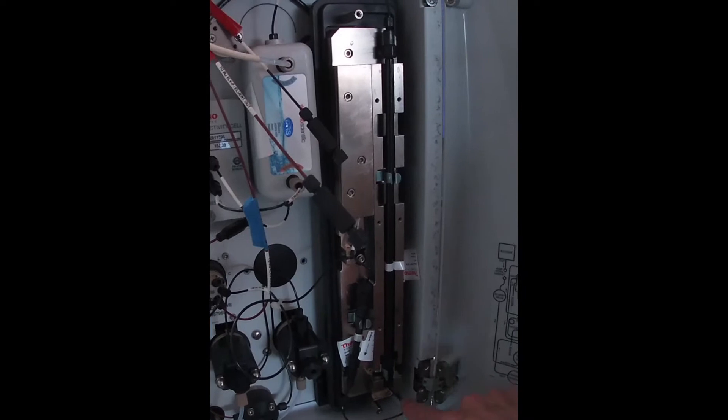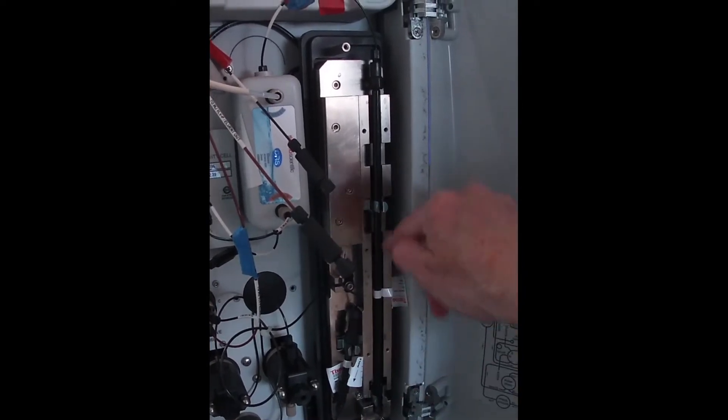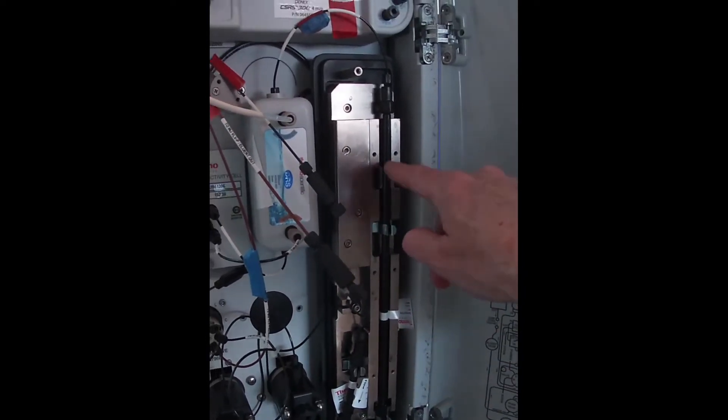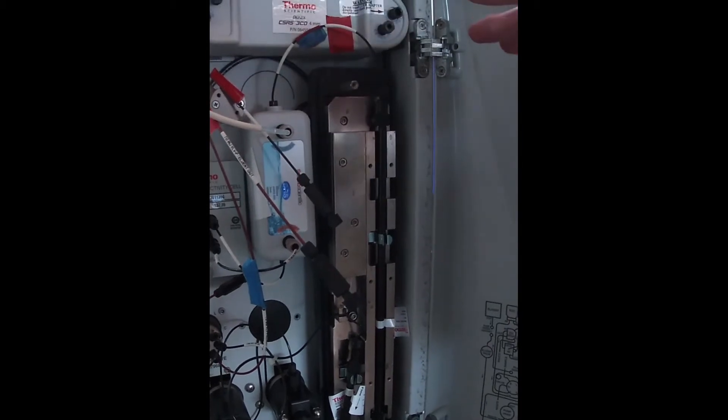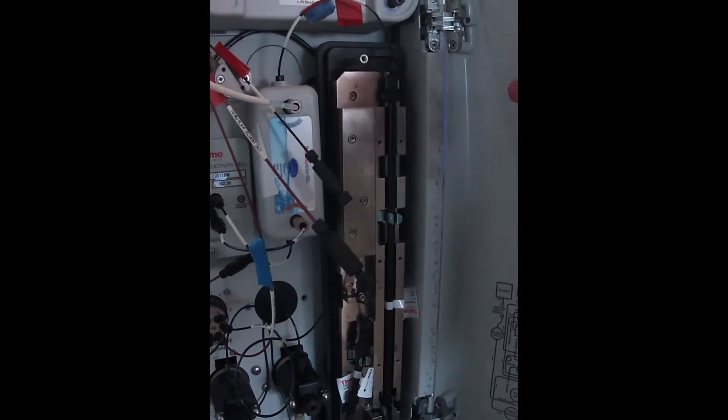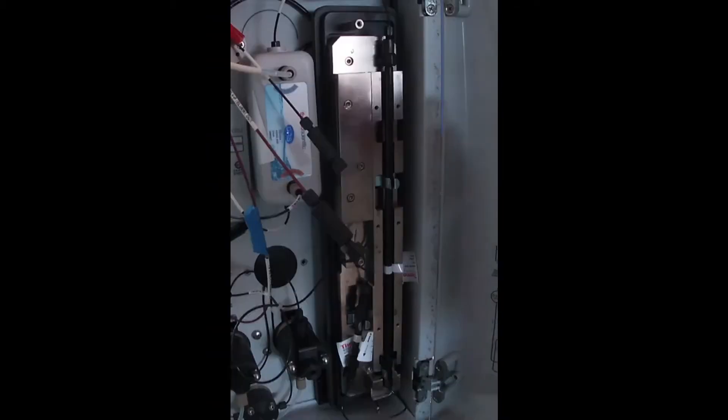So then it flows through here, goes through our analytical column where all the separation occurs. Separation predominantly being by charge magnitude but also affected by ion radius.